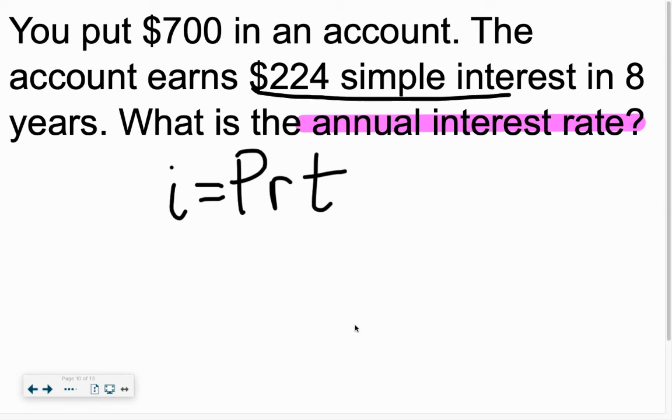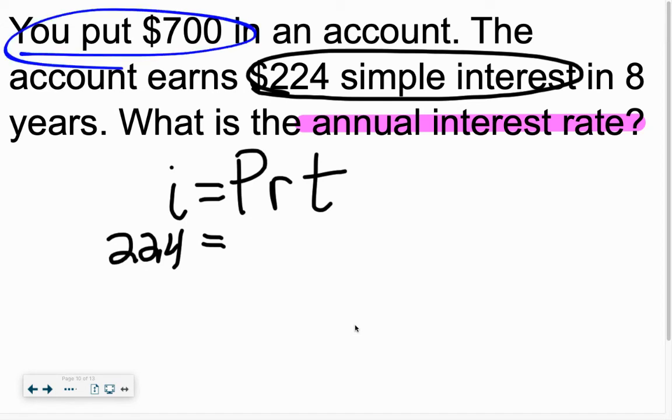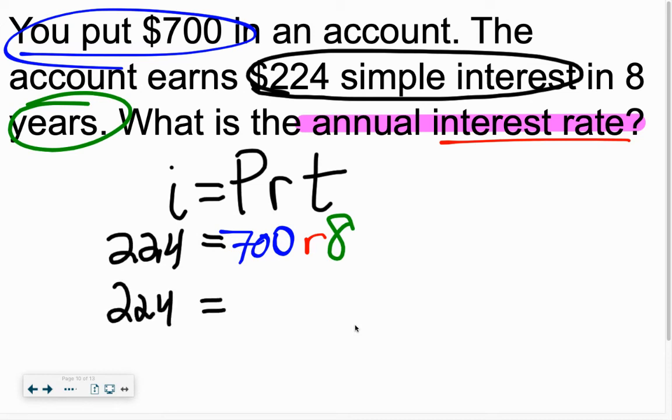Now, this one is different because it told us we earned $224 in interest. So plug that guy there. The principal, what do we start with in this one? We start with $700. Then it said to find the rate. So we don't know that. So I'm just going to leave that as R. And then we've got the time. And it said that was eight years. Good. So now, away we go. When we're looking at this, we'll keep the 224 here on the left side. But what's happening between everything right here, the 700, the R, and the 8, since they're all touching, they're timesing. So what I'm going to do then is I'm going to just switch my order. I'm going to take 8 times 700 to get 5600R.